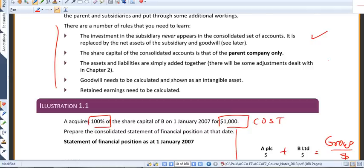The investment in the subsidiary doesn't appear in the consolidated accounts. It is, in fact, replaced line by line with the individual assets of the subsidiary and something called goodwill, which we're going to see in a moment.